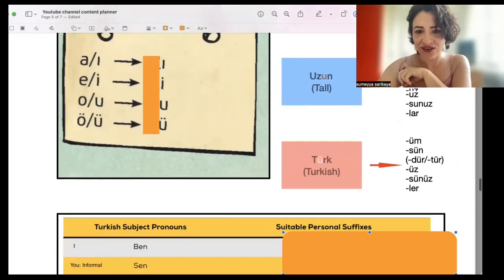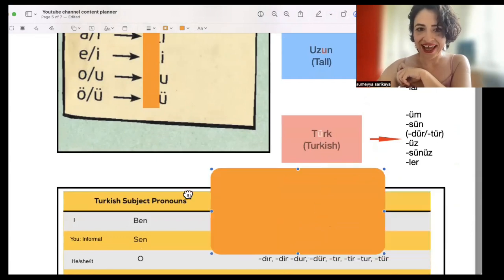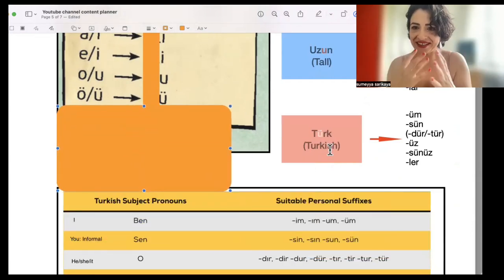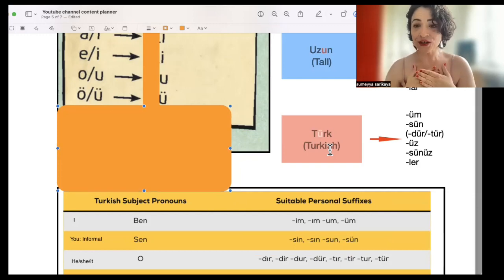So here is the word that contains ü, Türk, which means Turkish. Let's go. Ben Türküm. Sen Türksün. O Türk. Biz Türküz. Siz Türksünüz. Onlar Türkler.